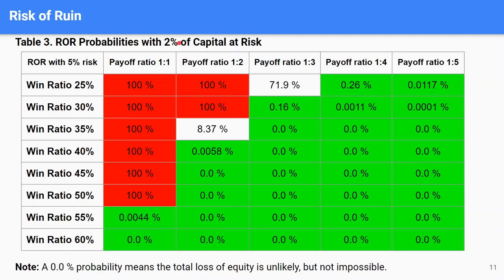Finally, in this case, if you reduce your risk to 2% per trade, you can see that for a payoff ratio of one to one your risk of ruin is still 100% if your win ratio is up to 50%. But for a payoff ratio of one to two and a win ratio of 40%, you can see the risk of ruining your account is almost zero percent.